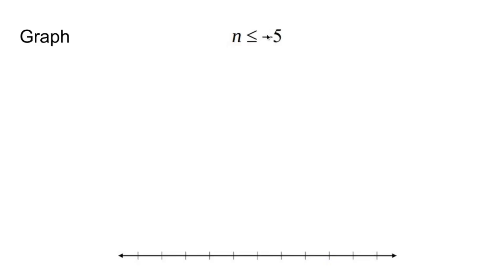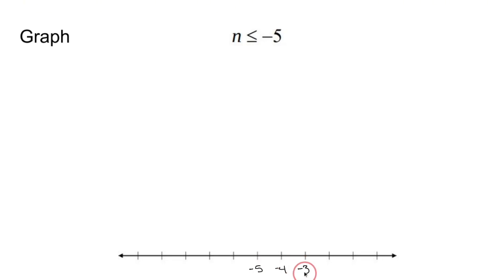To graph an inequality, you're going to be given some type of variable, some type of inequality symbol, and a number. What this means is we need to demonstrate on this graph what it means — the fact that n is going to be less than or equal to negative 5. So let's put negative 5 right there and fill in the rest of these spots with numbers.